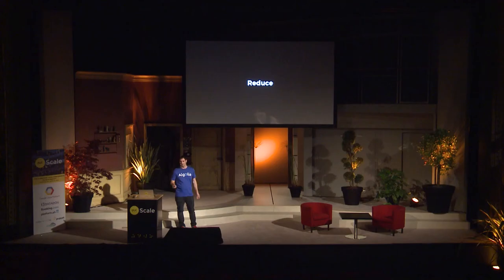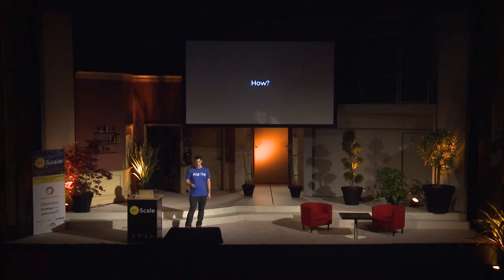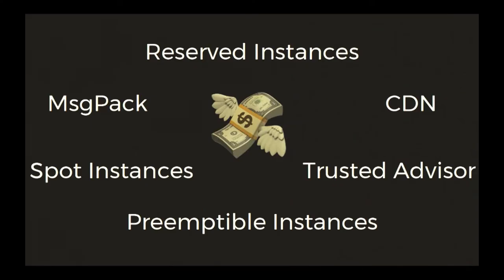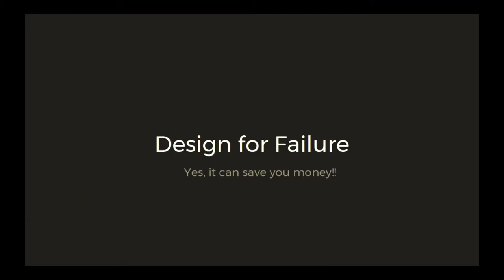The fourth thing you should do is actually do the reduction. There are simple things you can do, which probably most of you know, like using preemptible instances in Google, spot instances in Amazon, reducing size, using CDNs, and so on.